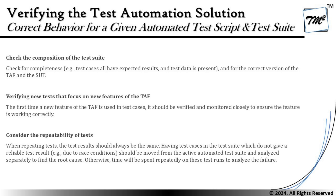The third element is considering the repeatability of the tests. When repeating a test, the results should always be the same. Test cases in the suite that do not give reliable results should be moved from the active automated test suite and analyzed separately to find the root cause — otherwise time will be spent repeatedly analyzing failures. Separating flaky tests allows execution to continue while the team investigates in parallel.